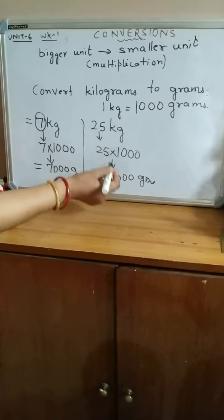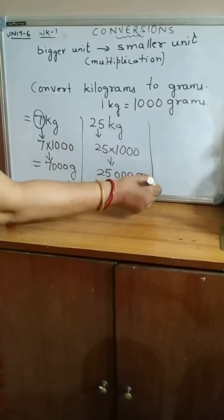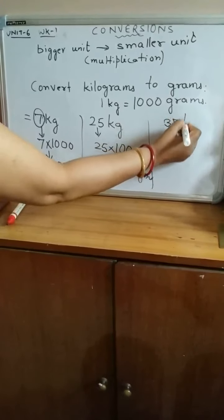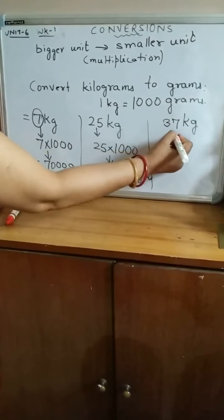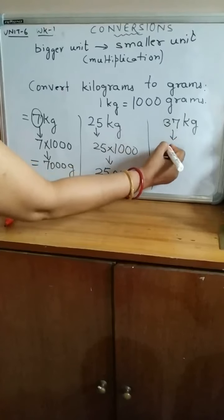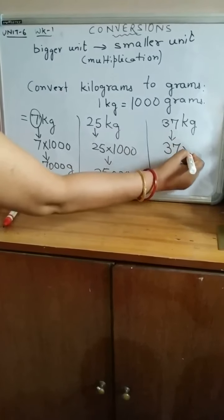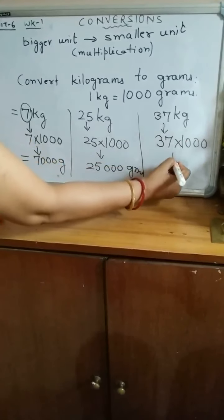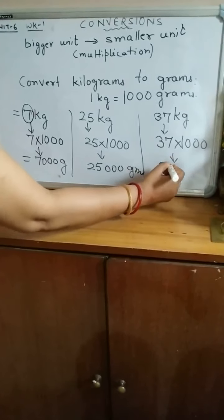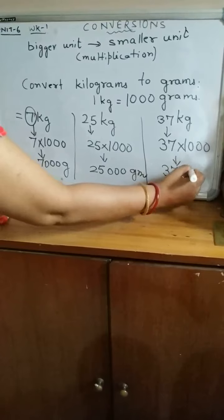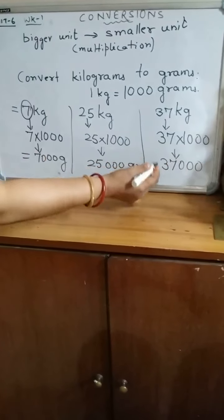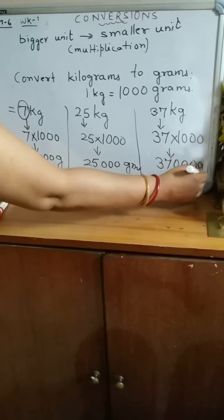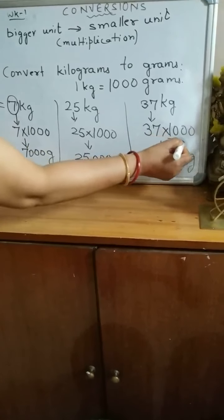Next is 37 kilograms. The number of kilograms, that is 37, will be multiplied by 1000. So after multiplication it will give 37,000 grams. So here we see that kilogram is converted into gram by multiplying with 1000.